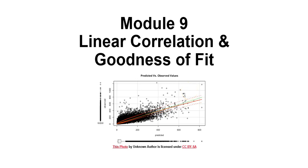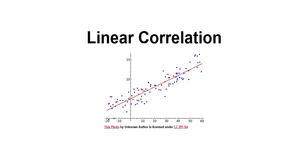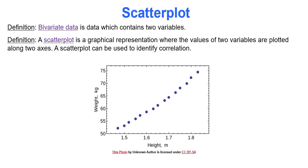Hello and welcome to module 9 where we are going to discuss linear correlation and goodness of fit test. First stop is going to be linear correlation. Bivariate data is data which contains two variables, typically an x variable and a y variable. Our goal in this module is to look at the relationship between these two variables.